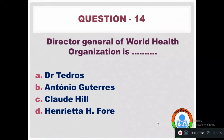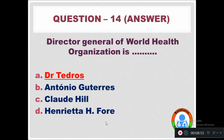Question 14: The Director General of the World Health Organization at present is — Option A: Dr. Tedros. Option B: Antonio Guterres. Option C: Claudia Hill. Option D: Henrietta H. The Director General of the World Health Organization is currently Dr. Tedros, from Ethiopia.